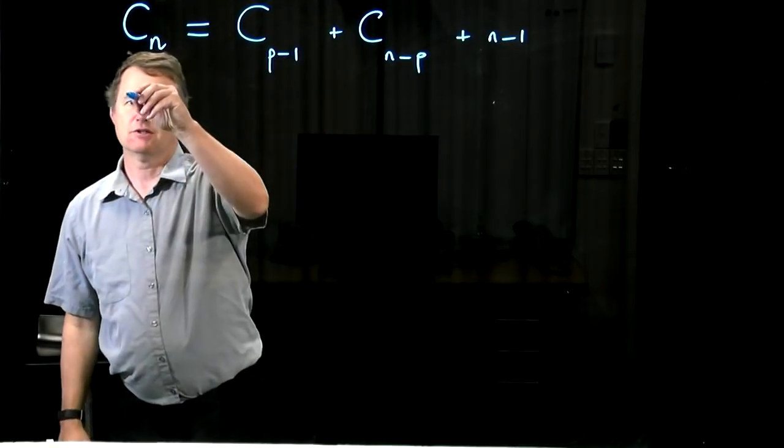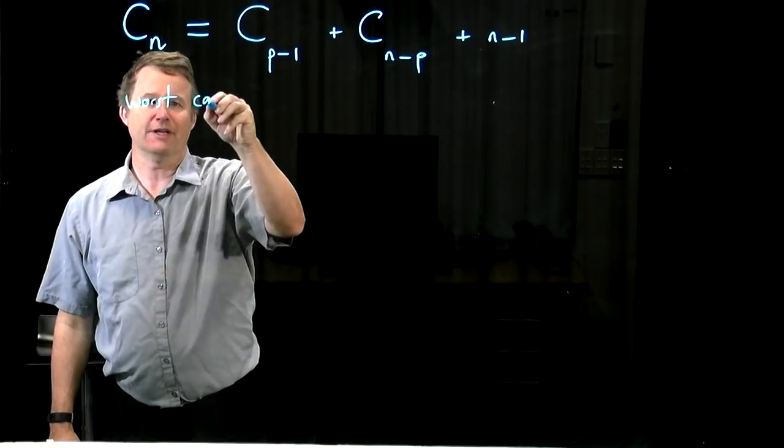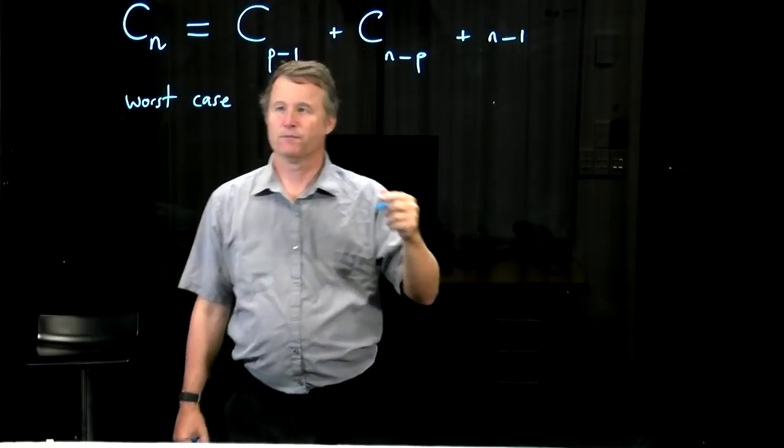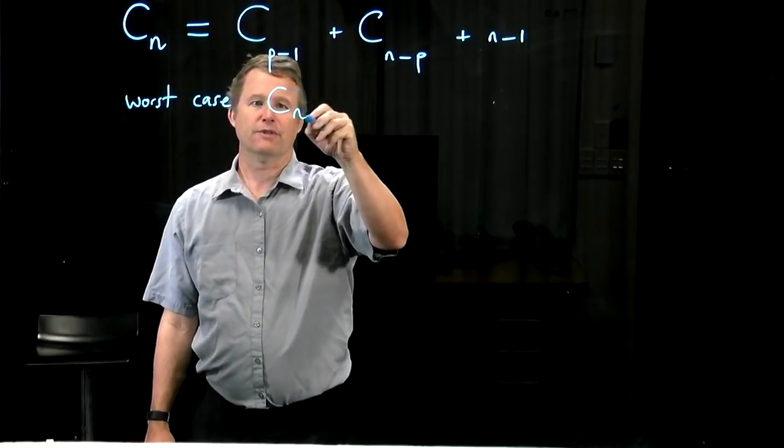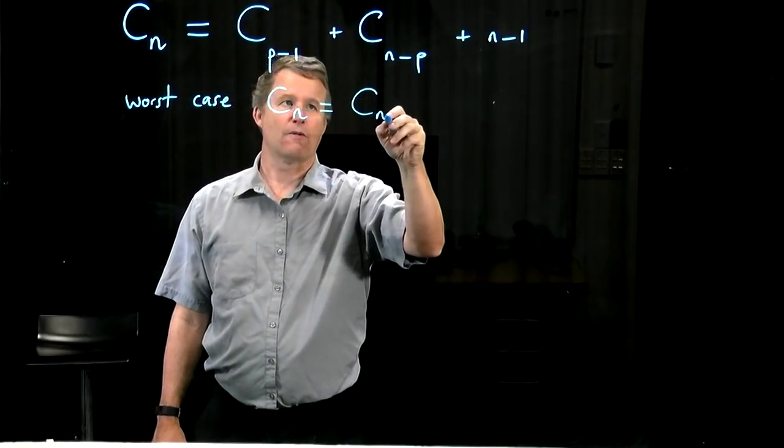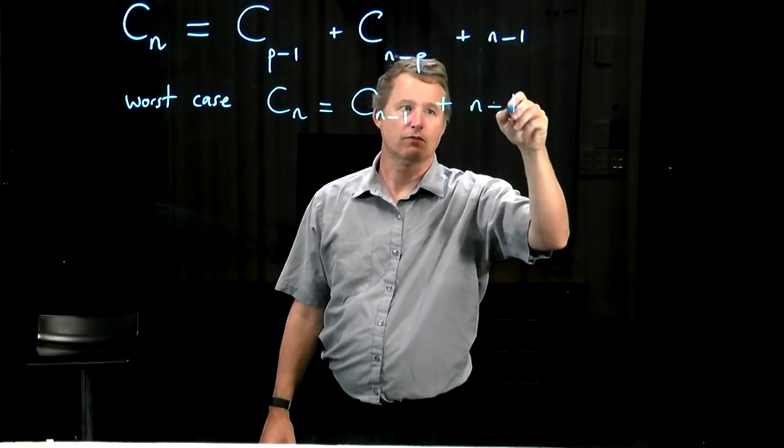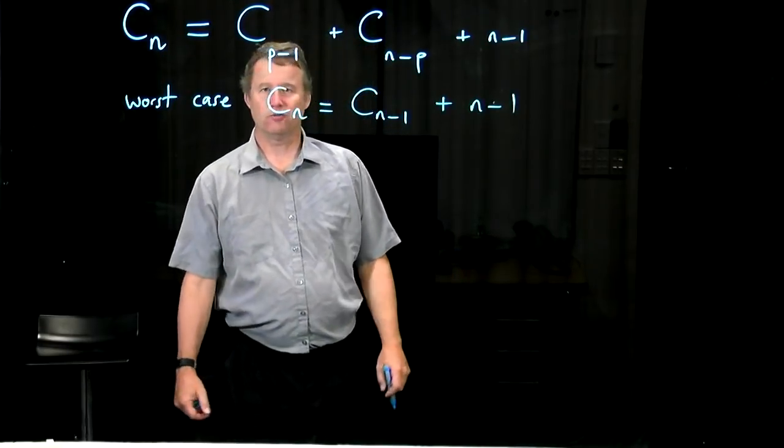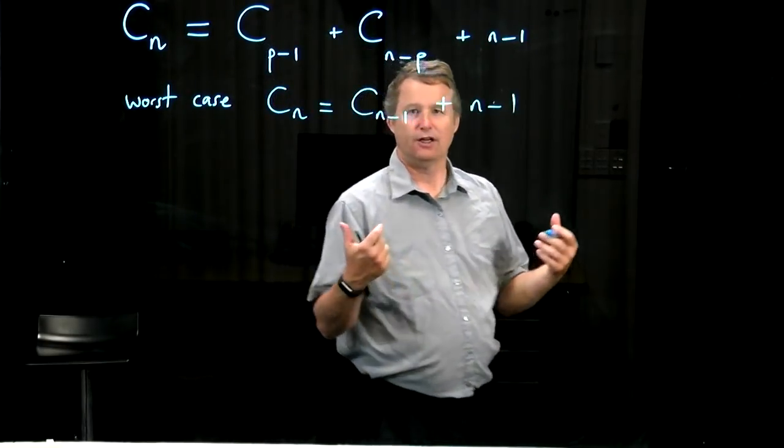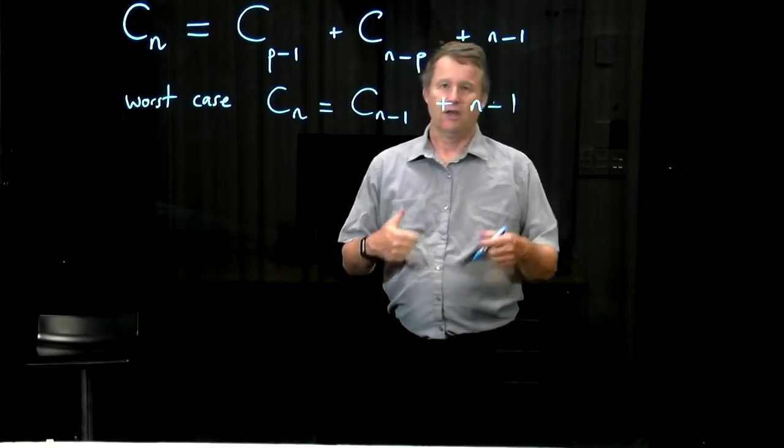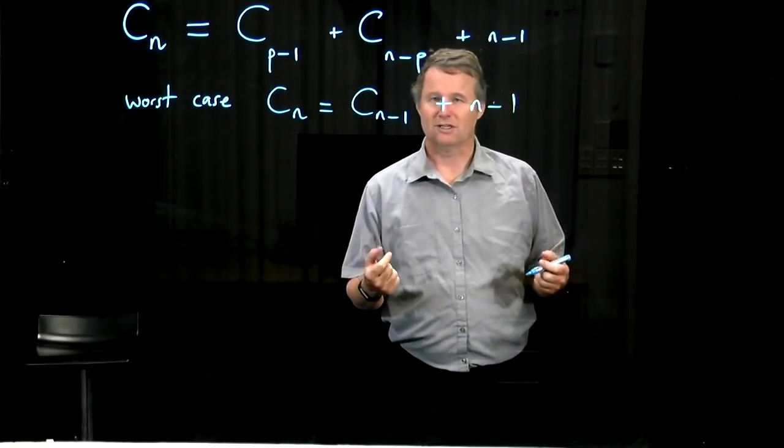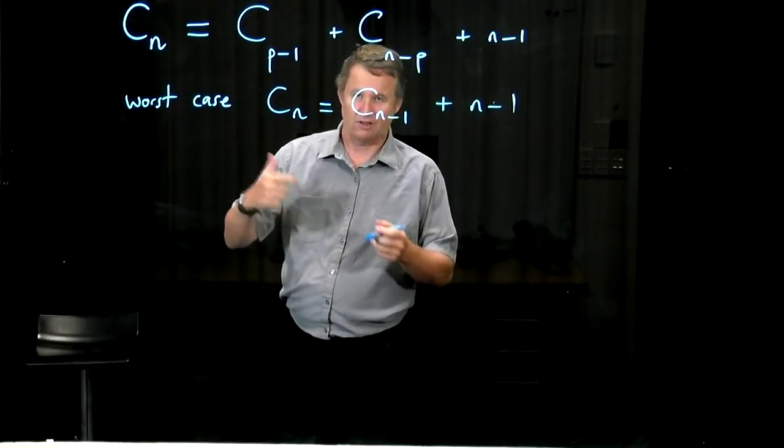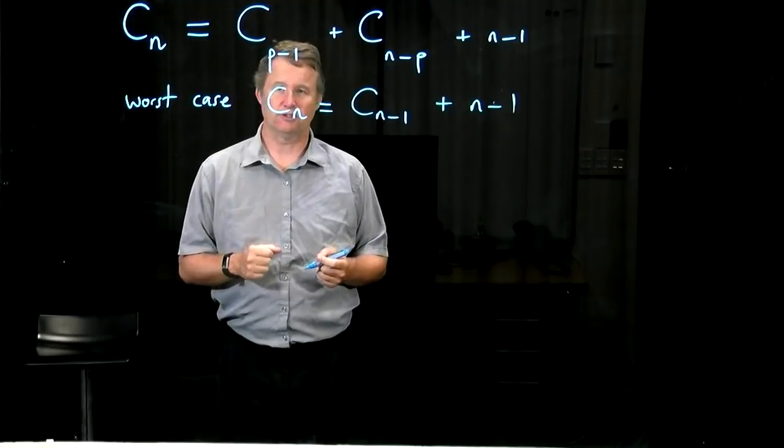Now in the worst case, the pivot ends up just where it started, at the first position or maybe at the other end. All you'll have done is done a lot of work in order to put the pivot in a fairly obvious position, and then you just reduce the input size by one. You still have a very large left or right sub-list. And the other one's empty, but that's no consolation. It's still a lot of work to do.